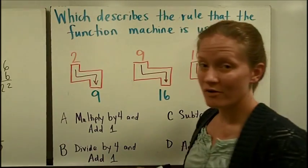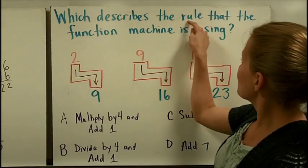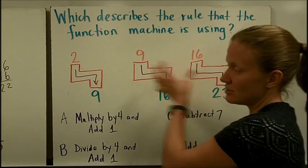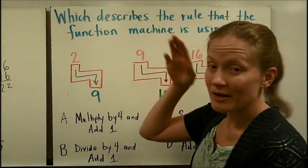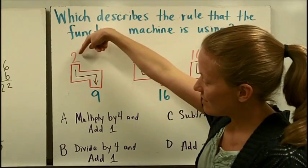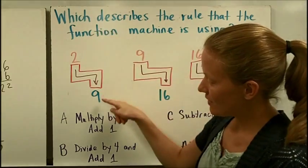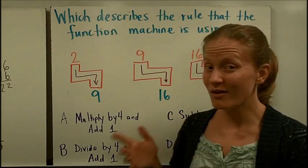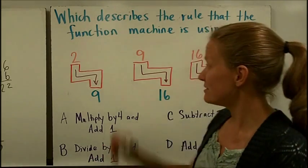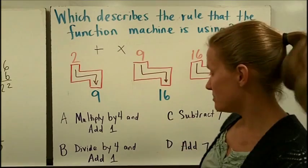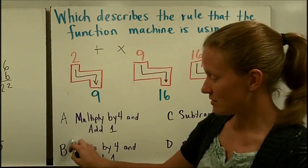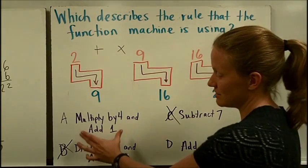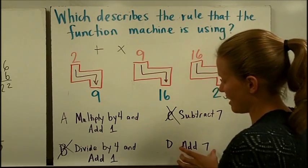Let's do one more function machine question. Which describes the rule that the function machine is using? This is the same function machine each time and it's doing something to the numbers. I'm going to immediately notice that the numbers are getting bigger. If I put in a 2, I get out a bigger number. I put in a 16, I get out a bigger number. So I could go ahead and eliminate anything that doesn't say adding or multiplying. Here's a dividing. That's going to make the number get smaller. And here's a subtracting. That's going to make the number get smaller. So it needs to be either multiply by 4 and add 1 or add 7.